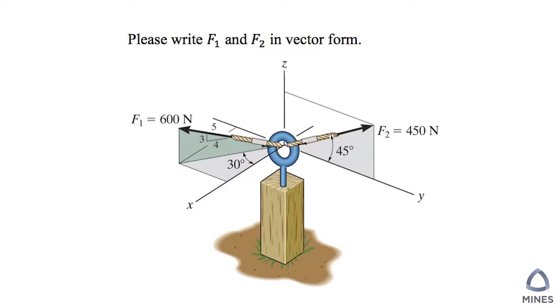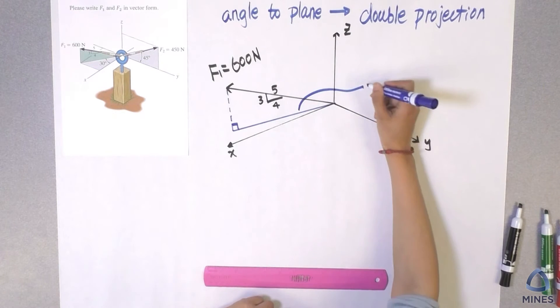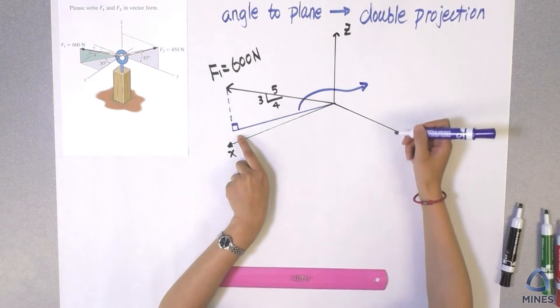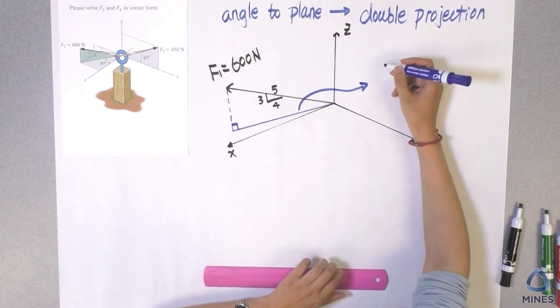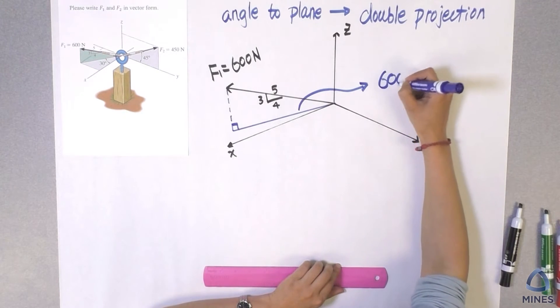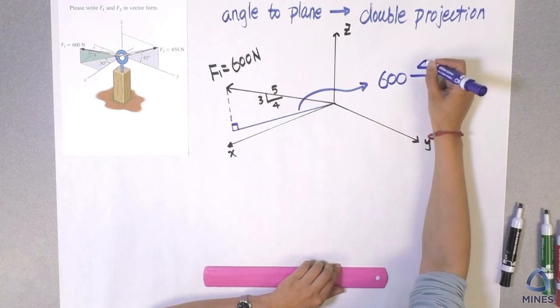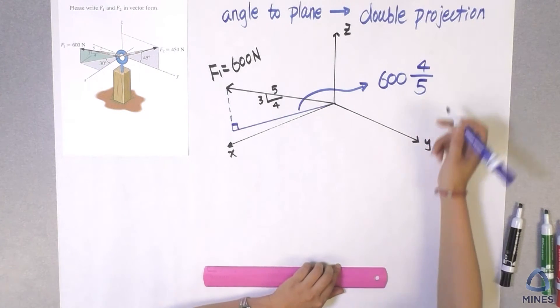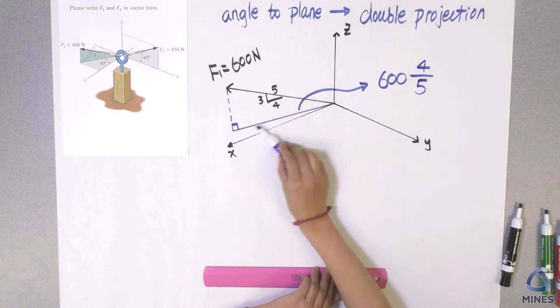So now let's take a look. What is the length for this blue line? We have to use a similar triangle. This is a 3-4-5 triangle. You can see 3-4-5, and this is a big 3-4-5 triangle. So which means the length of the blue line here is going to be 600, the hypotenuse, multiply 4 over 5.